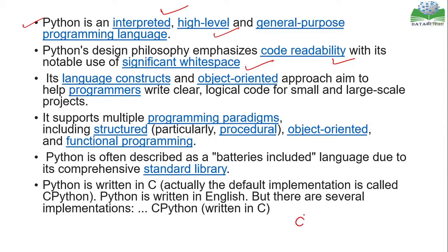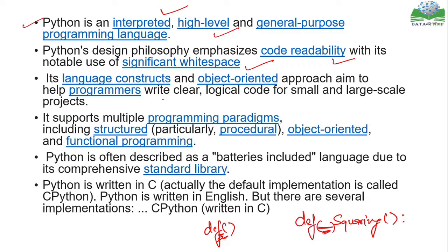White spaces refer to the indentation used when defining functions — for example a function for squaring numbers. This difference in spacing is called white space, making code easy to understand. In C or C++ or Java you don't have the same clear spacing. Python's language constructs and object-oriented approach help programmers write clear, logical code for small and large-scale projects. It supports multiple programming paradigms, including structured procedural, object-oriented, and functional programming, and also integration with Java via Jython.